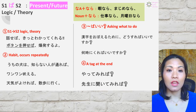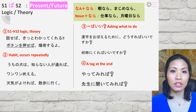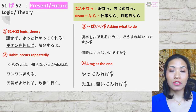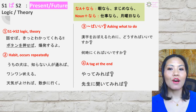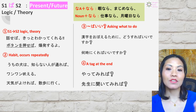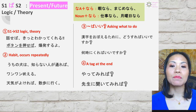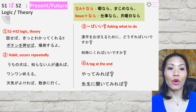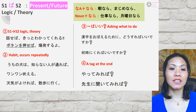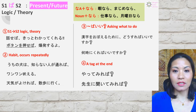Next is ば condition. The structure is: sentence one + ば + sentence two, present/future. The characteristic of ば is logic and theory. There are four points. Number one, logic and theory: 話せばきっと分かってくれる and ボタンを押せば爆発するよ — that's the logic of the machine. Number two is habit that occurs repeatedly: うちの犬は知らない人が通ればわんわん吠える — that's the habit, and 天気が良ければ散歩に行く.